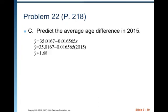Predict the average age difference in 2015. So y hat is equal to 35.0167 minus 0.016565 times 2015. And we get 1.68. Now, we're not saying that you should expect the difference between ages of any particular couple to be 1.68 years. But they're saying that overall, the average of all couples in 2015, the difference would be 1.68.